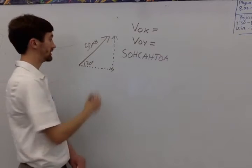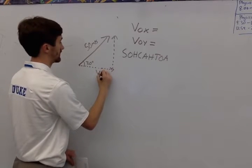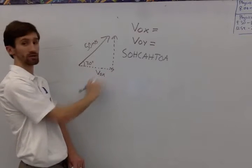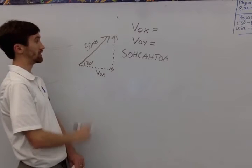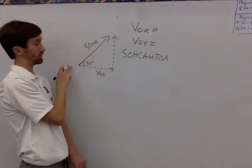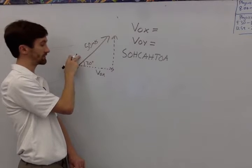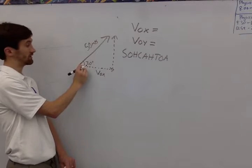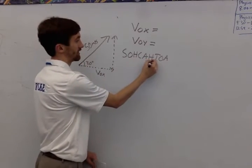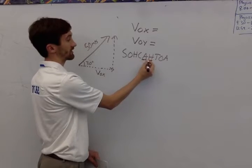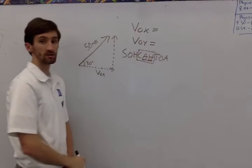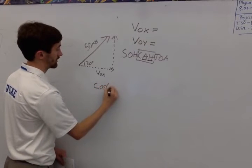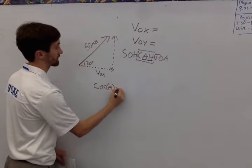So I'm going to start by finding the initial velocity in the x direction, the x component of the initial velocity. I know that the total velocity is my hypotenuse, and here the x component is adjacent to my angle. So if I have the hypotenuse and the adjacent, I know that I'm going to use cosine.